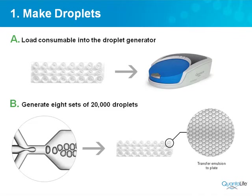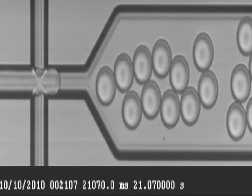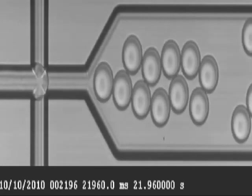Once you load up the sample and oil, you put it in the droplet generator. It starts generating droplets by applying vacuum. This is an actual video, slowed down of course, of droplets being generated. One thing you can note is that the droplets are all exactly the same size — the sizes are controlled by the size of the orifice through which the droplets get pushed. The oil comes in from the side, the aqueous comes in through the center, and the droplets get pinched off at a rate of a thousand per second. After a few minutes, you have all eight samples partitioned into droplets.